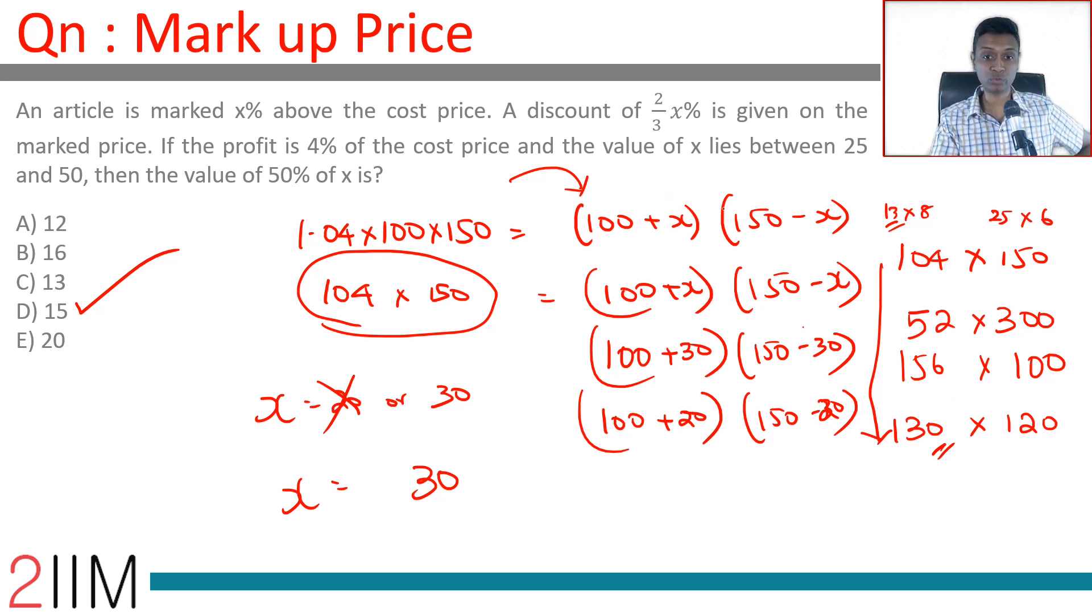Turns out only one of those works based on this condition. So x has to be 30. 50 percent of x is 15.